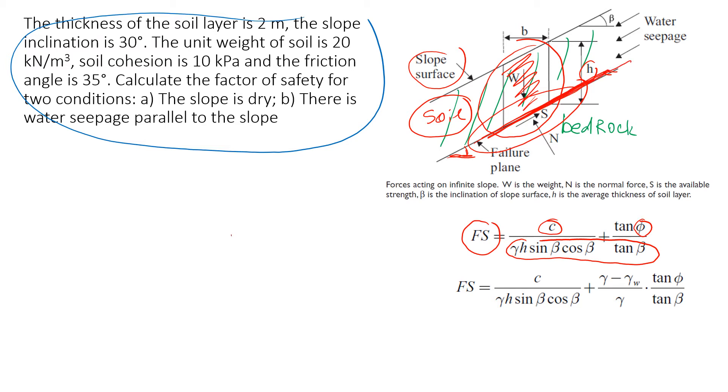This is how it works. This formula is for dry slope, and this formula is for the slope when there is seepage. Water will seep along the slope and of course it will decrease the stability of the slope.